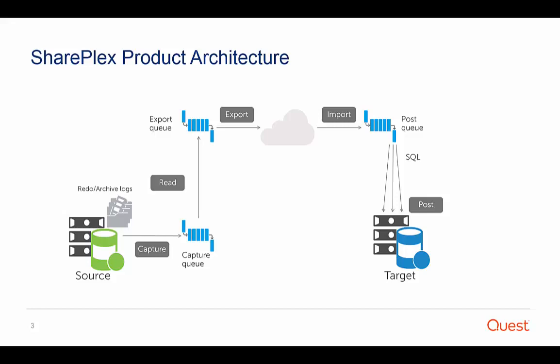On the source system, the capture process reads the Oracle archive or redo logs, then makes a copy of the data and sends it to the capture queue. The read process reads the capture queue and prepares the data for transport across the network, then places that data into the export queue.